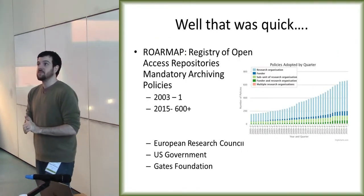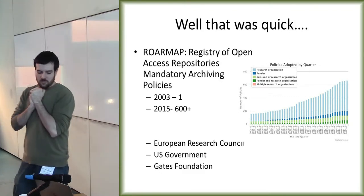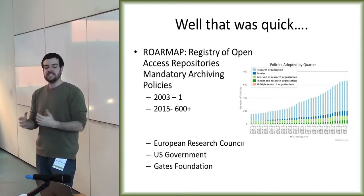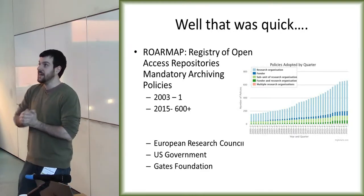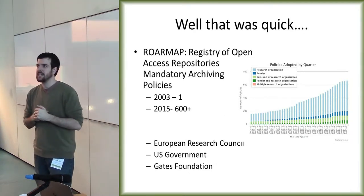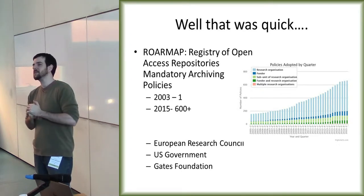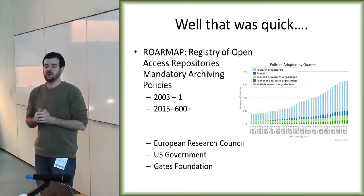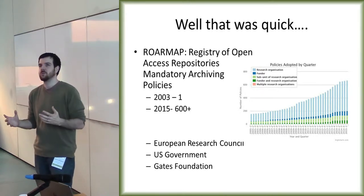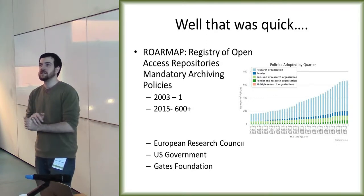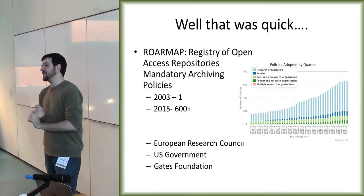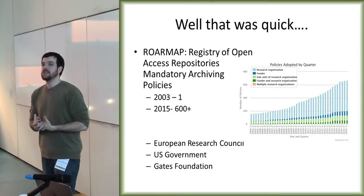Just to give some general background: there's the ROAR map, which basically tracks mandates for open access, and that has exploded. When they first started tracking back in 2003, they had one. It was still very small — only a couple dozen mandates. Now there are over 600 mandates around the world. The US government now mandates open access. The European Research Foundation, Gates Foundation — all mandating open access. And it's getting bigger.